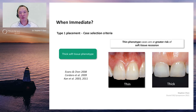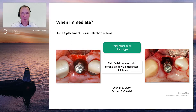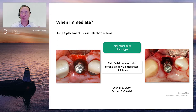For case selection with immediate implants, we look for cases with a thicker soft tissue phenotype to minimize recession risk. Secondly, we look at the bone phenotype. Thin facial bone phenotypes show up to three times greater corono-apical resorption compared to thick bone phenotypes. With vertical resorption, the soft tissue loses its support, which in turn can result in soft tissue recession.